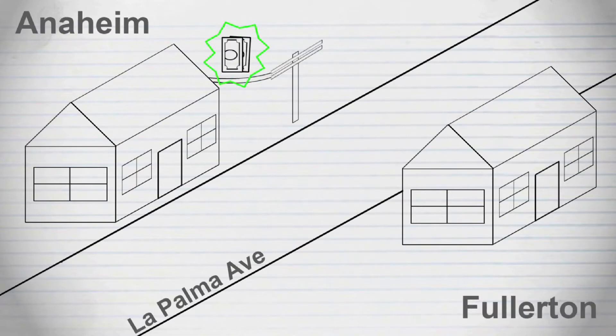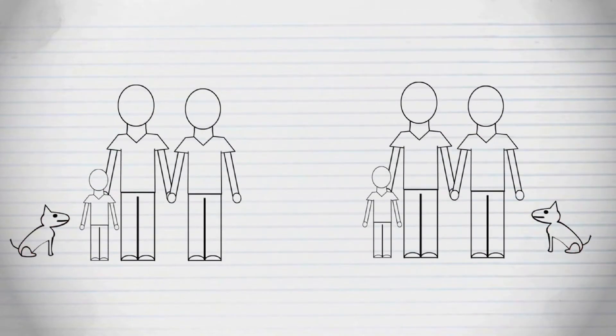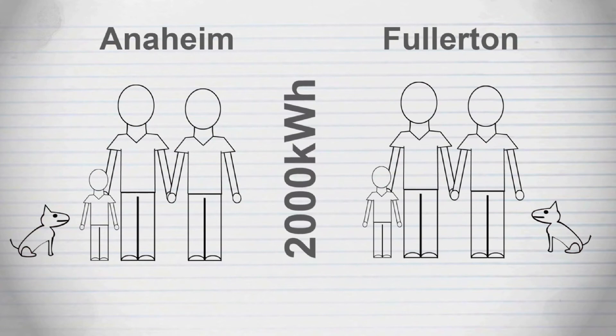Let's take two identical families living in identical tract homes on either side of the street. They both use the same amount of power—we'll say two thousand kilowatt hours per month. The Fullerton side pays over three thousand five hundred fifty-three dollars more per year for its power.